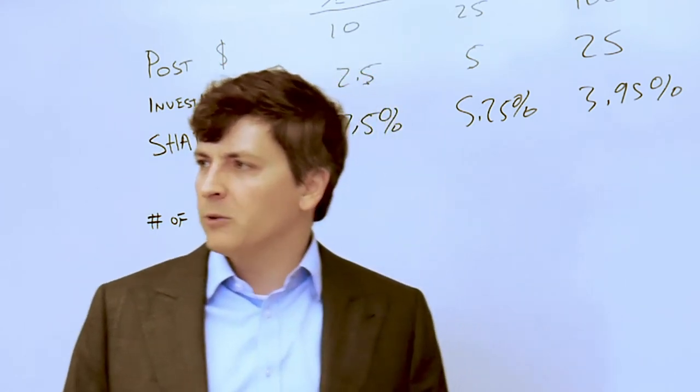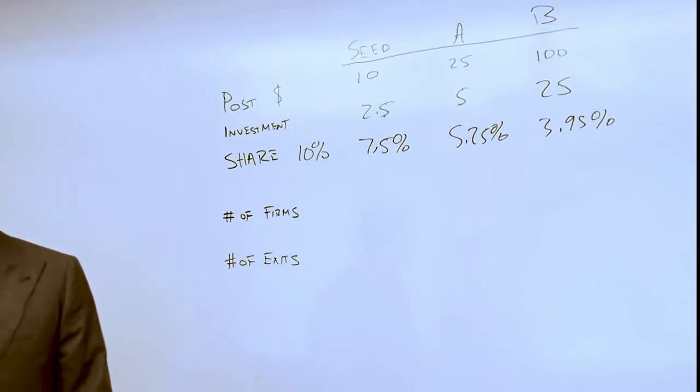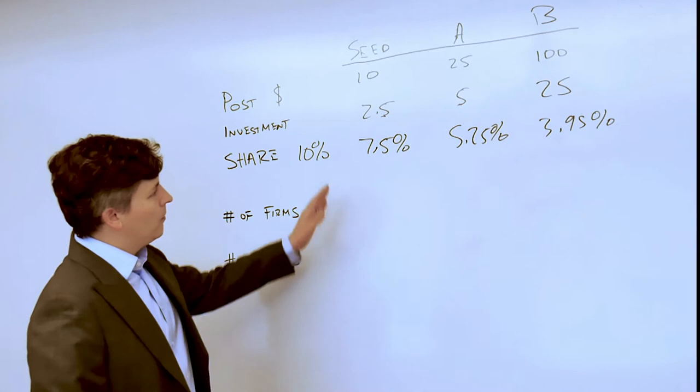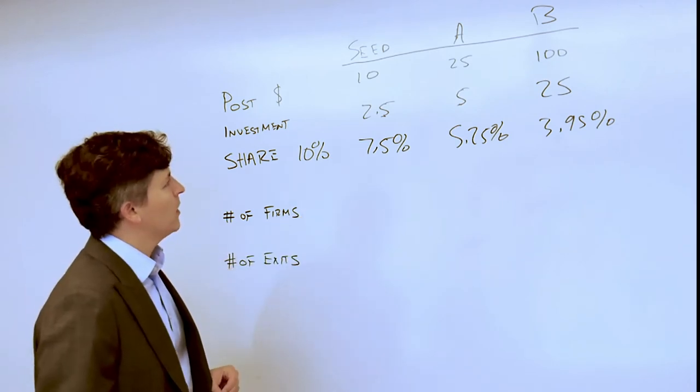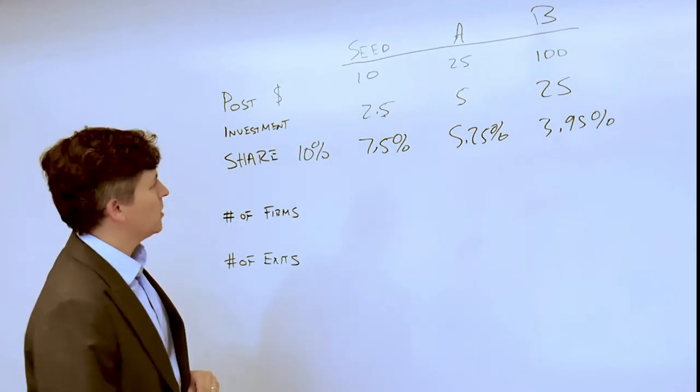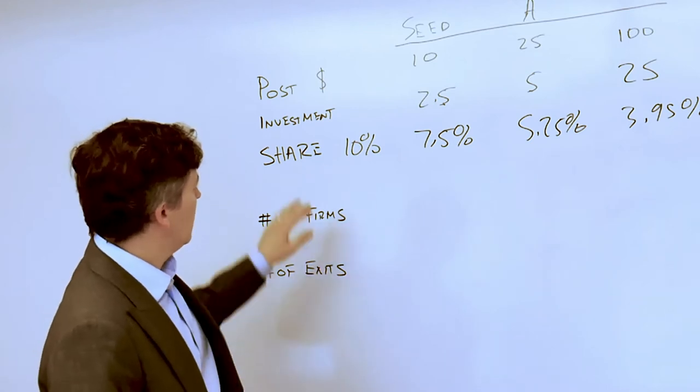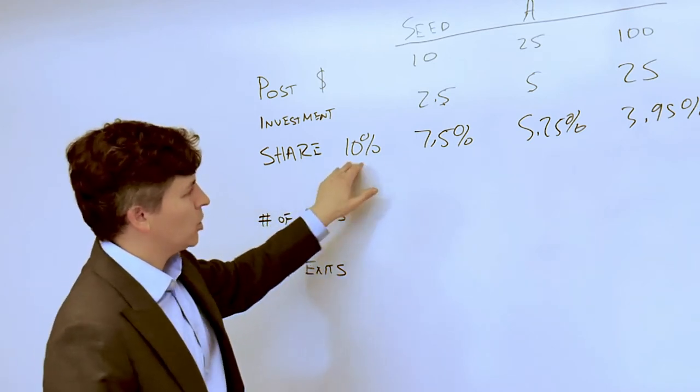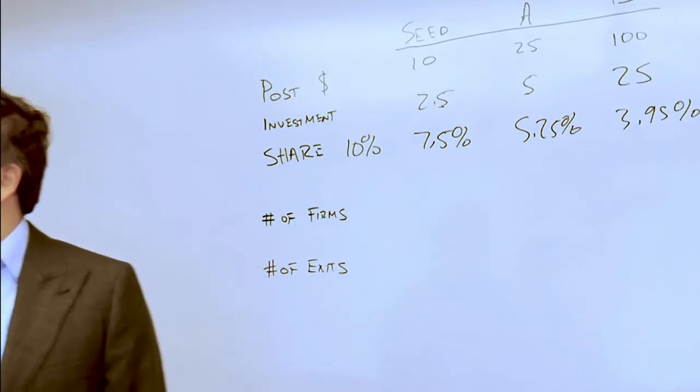As a result of putting that outside money into the firm, your share is going to be diluted. This figure walks you through three rounds of investment where in the seed round the post-money valuation is ten million dollars after a two and a half million dollar investment, which means that your original ten percent share is now only seven point five percent of the total outstanding equity in the firm.